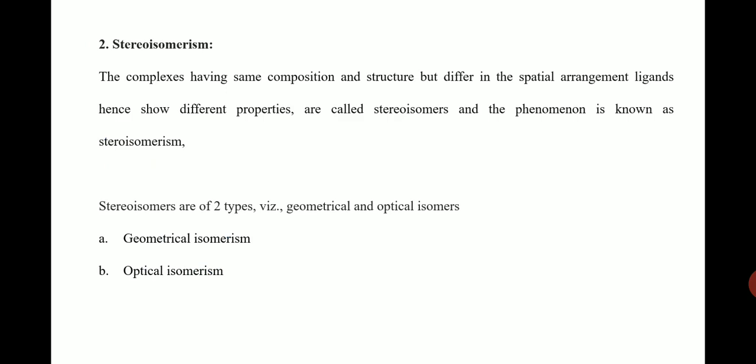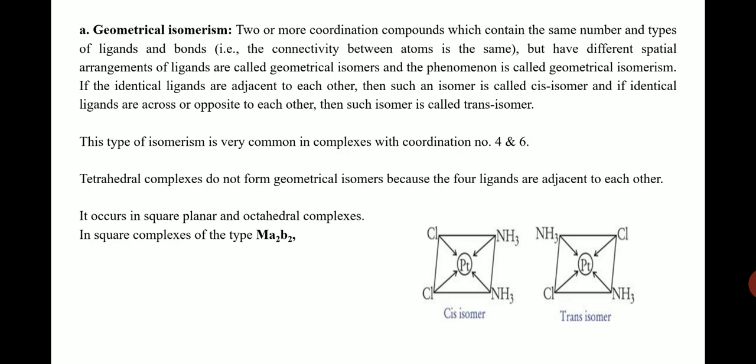Coming to stereo isomerism: complexes having the same composition and structure but differing in the spatial arrangement of ligands, and hence showing different properties, are called stereo isomers. The phenomenon is known as stereo isomerism. We mainly have two types: geometrical isomerism and optical isomerism. Two or more coordination compounds which contain the same number and types of ligands and bonds but have different spatial arrangement of ligands exhibit geometrical isomerism.